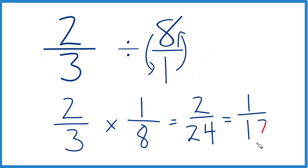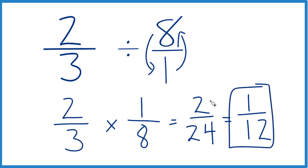Twenty-four divided by two is twelve. So in answer to our question, two-thirds divided by eight — or equivalently two-thirds times one-eighth — equals one-twelfth.